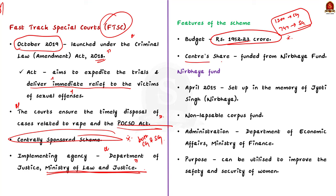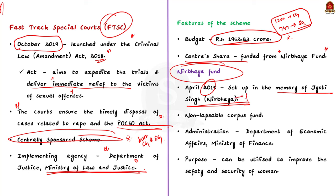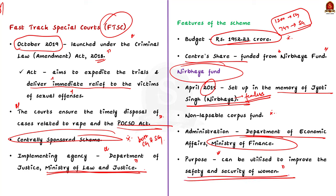Let us see a quick recap about the Nirbhaya Fund. Nirbhaya Fund was set up in April 2015 in the memory of Jyoti Singh, referred to as Nirbhaya meaning a fearless girl. In December 2012, Nirbhaya was assaulted and brutally raped in a moving bus in Delhi, which shook the conscience of the nation. To avoid such brutal incidents in the future, the government set up the Nirbhaya Fund. It is a non-lapsable corpus fund administered by the Department of Economic Affairs, Ministry of Finance, and can be utilized for projects specially designed for the safety and security of women. Using this fund, the Central Government is financing the FTSC scheme.